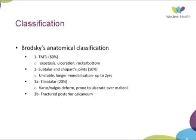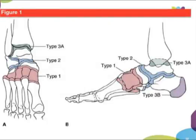Along with the Eichenholz clinical staging, there's also Brodsky's classification of where the Charcot arthropathy is actually occurring in the foot and ankle complex. The majority — 60% — occurs in the tarsometatarsal joint, where you can get exostosis, ulceration and rocker bottom deformities. About 10% occurs in the subtalar and Chopart joints, which are more difficult to treat, unstable, and often require longer immobilisation of over two years. Types 3A and 3B cover the tibiotalar joint, which can produce ulcerations over the malleoli areas, and fractured calcaneum respectively.